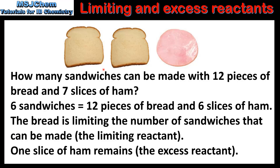So if this were a chemical reaction, the bread would be the limiting reactant and the ham would be the excess reactant. This is because the bread is limiting the number of sandwiches that we can make, and after all the bread has been used up we have one slice of ham remaining.